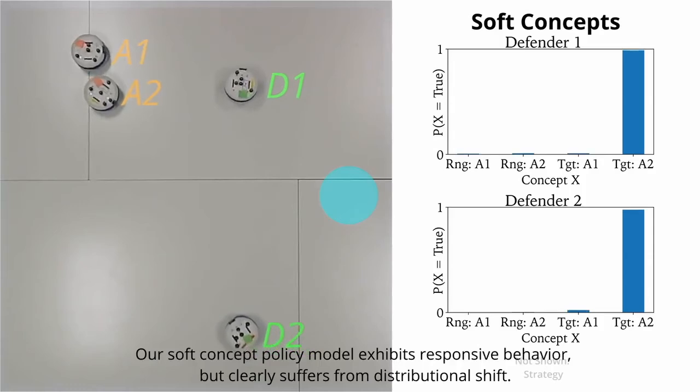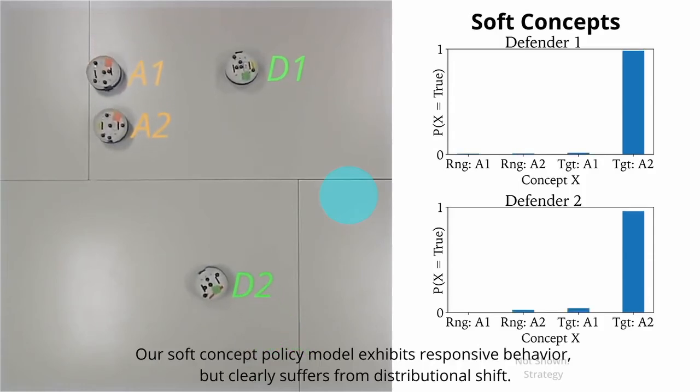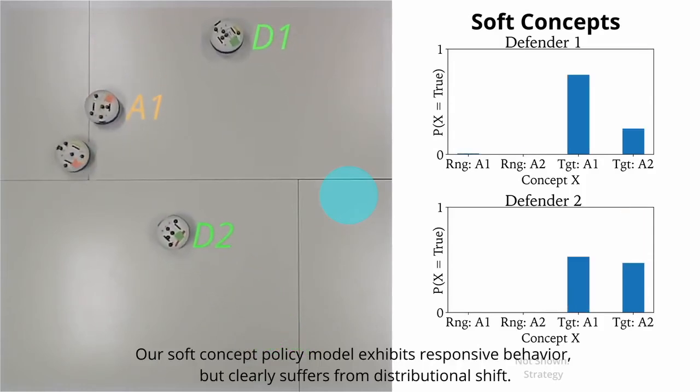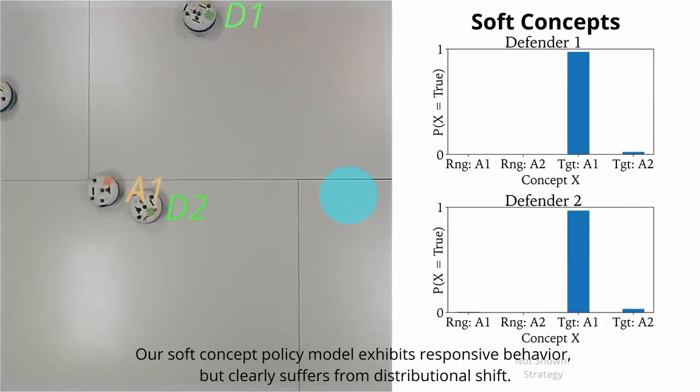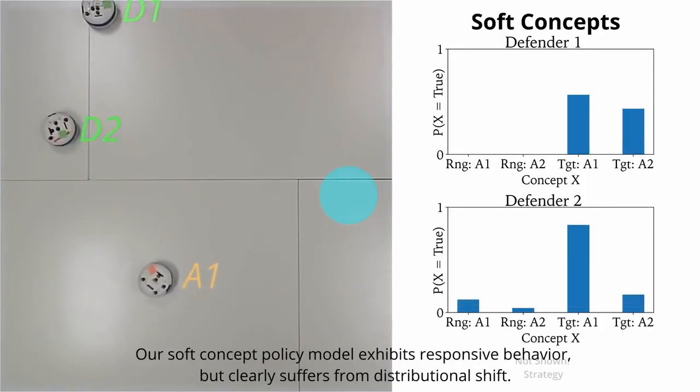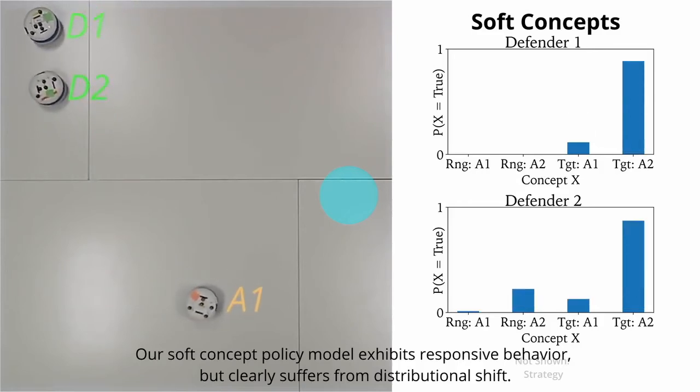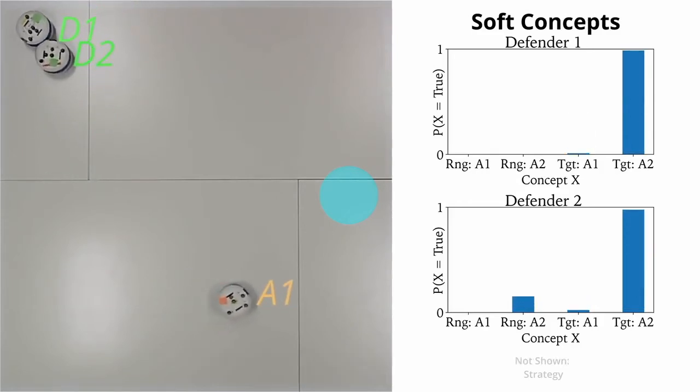Next, we have the soft concept models, which clearly have some more responsive behavior, but they suffer more from a distributional shift, and so they're predicting incorrect concepts and are therefore not performing well.